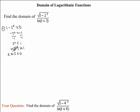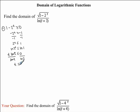Now this is easy to isolate for t, because we can divide both sides by ln of 2. And 0 divided by ln of 2 is going to be 0. So we have t is less than or equal to 0.